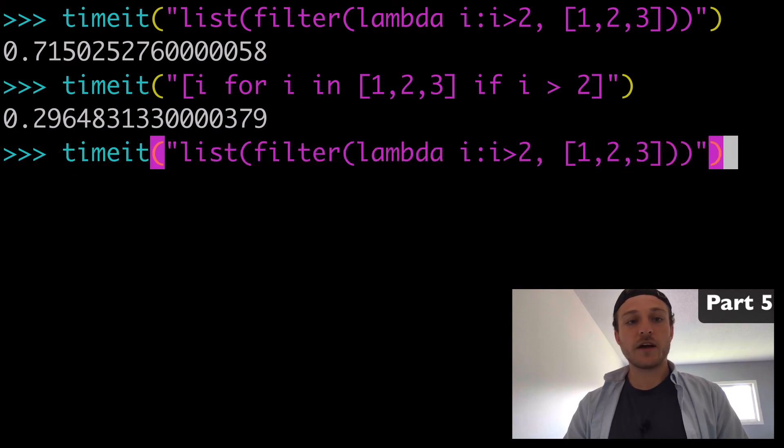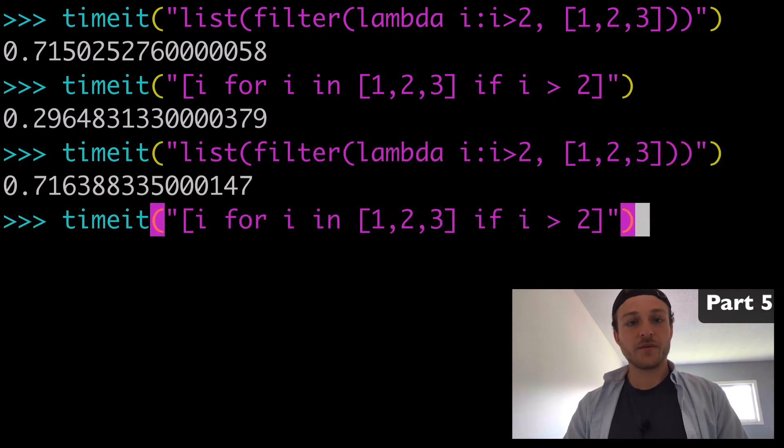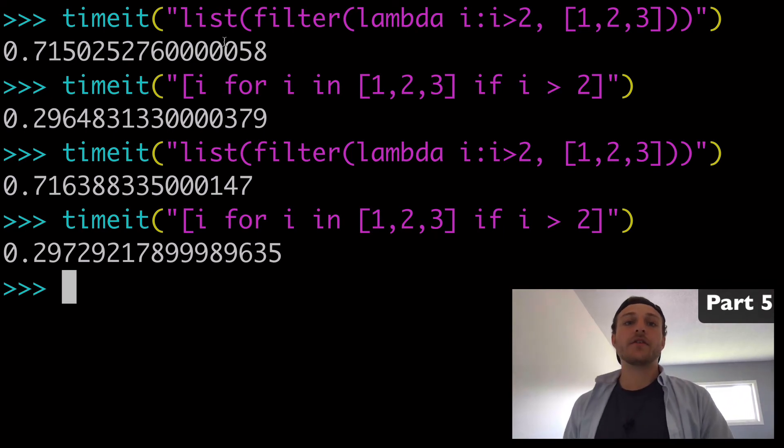And let's run it one more time just to see that it's consistent. And yeah, so basically using a list comprehension is much quicker than using a filter with the lambda.